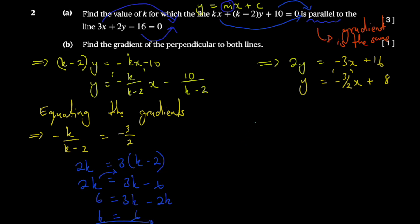You can also proceed to the next part. The next part says: find the gradient of the perpendicular to both lines.